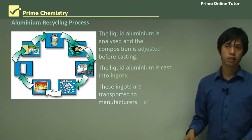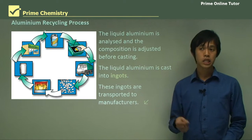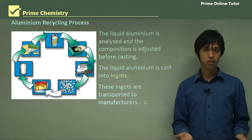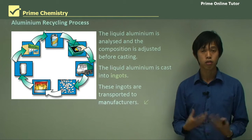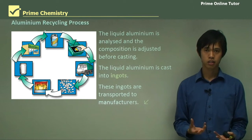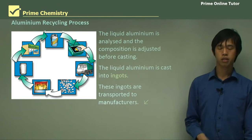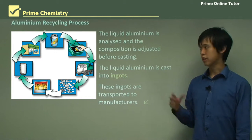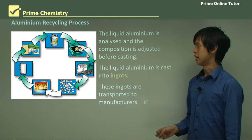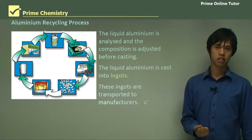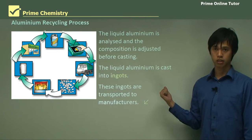This concludes today's lesson on aluminium recycling. We looked at the whole process — it's a very simple process because aluminium has already been refined, so we're just trying to get it back. It's cheaper, easier, and a lot less energy intensive than aluminium extraction.